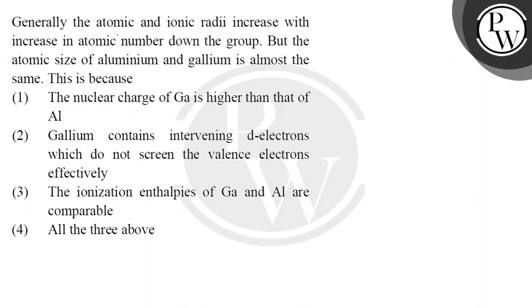Hello, let's see the question. Generally the atomic and ionic radii increase with increase in atomic number down the group. But the atomic size of aluminium and gallium is almost the same. Actually if we look at the group of 13 elements.